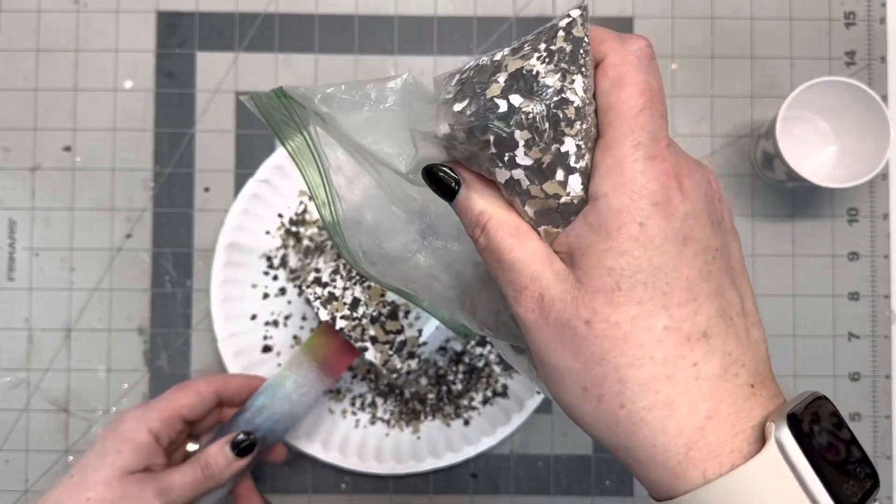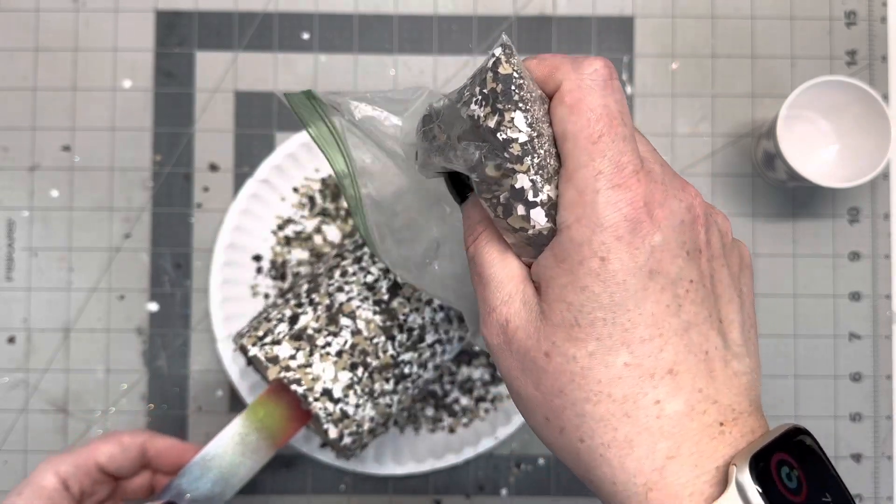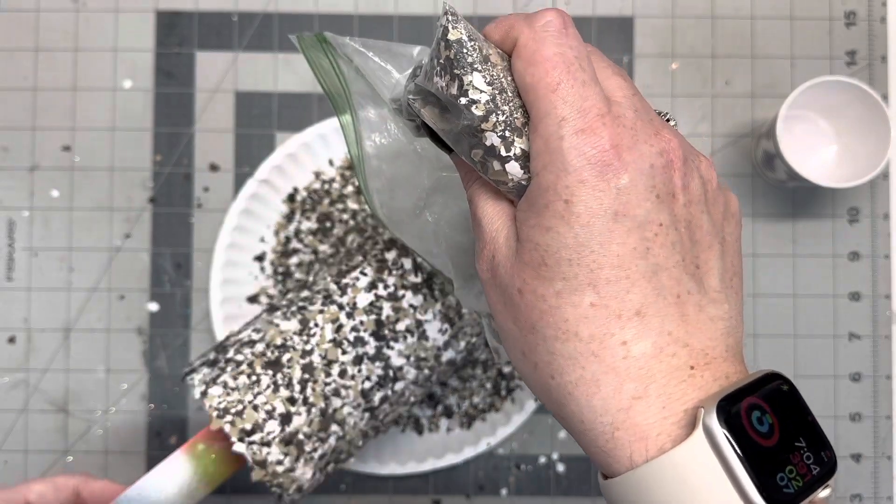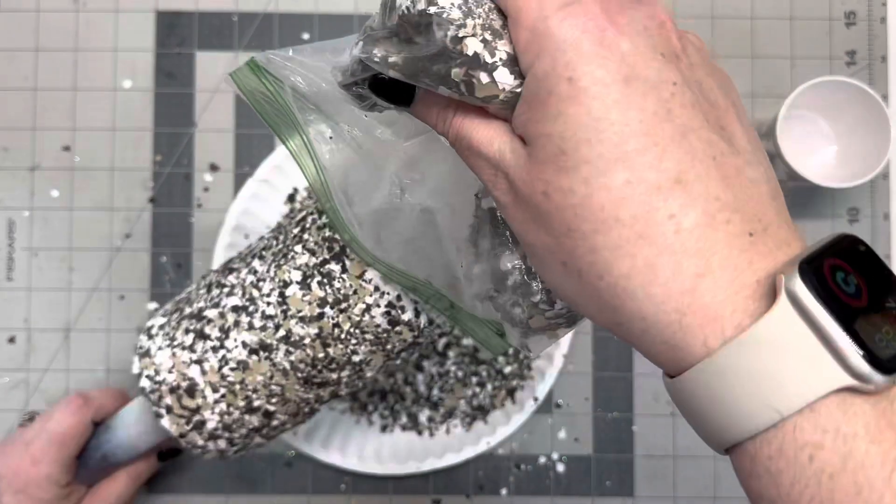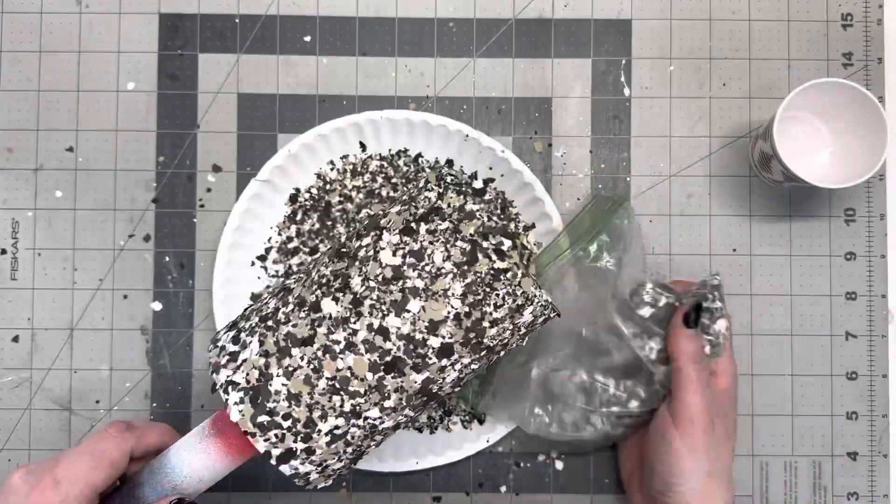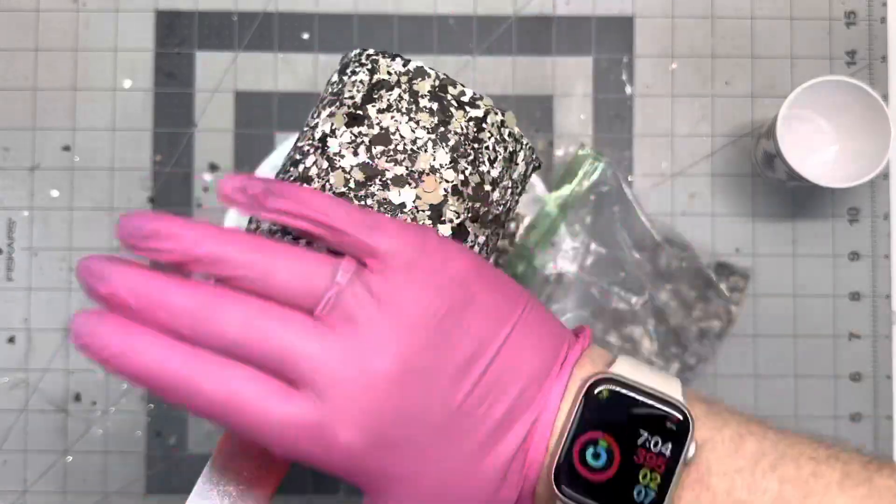I'm going to start out by either crumbling these with my hands or you can smash them with your PVC pipe, hammer, whatever you want to do, but just break them down so they're a little bit smaller. The smaller they are, the less pokey they're going to be, the less they're going to stick up, and you're not going to have to sand as much too.